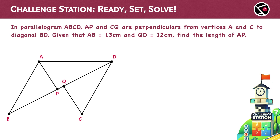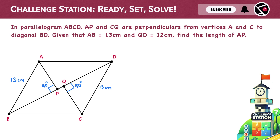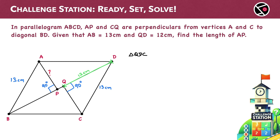All right, let's work through it. What do we have? AP and CQ are perpendicular to BD. So, angle APB is 90 degrees and angle CQD is also 90 degrees. AB is 13 centimeters, so the opposite side DC will also be 13 centimeters. QD is given as 12 centimeters. And we need to find AP. Triangle QDC is a good choice — it is a right-angled triangle and we already know two of its sides.